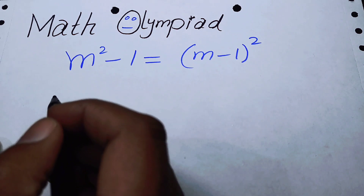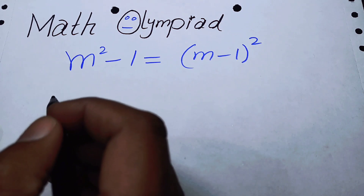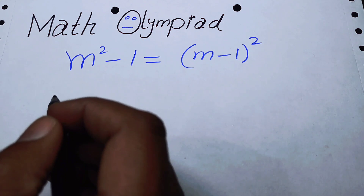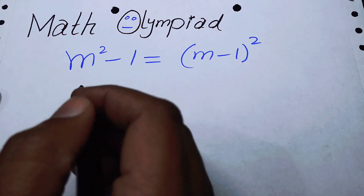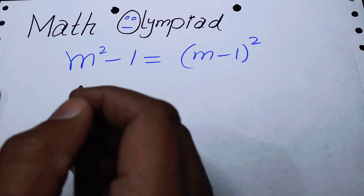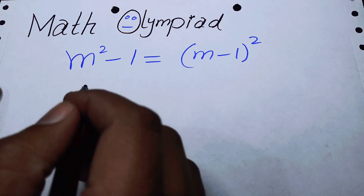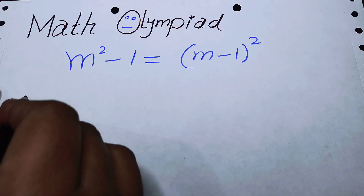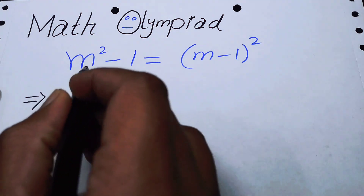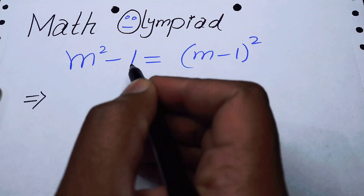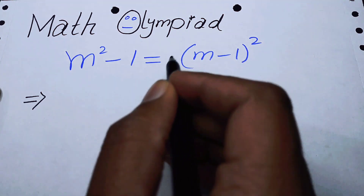Hello everyone, welcome back to the Map of Mathematics. In this video we are going to solve this nice equation. The very first thing we are going to do is focus on the left hand side, where we have m squared minus one.